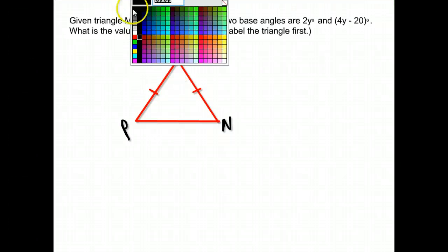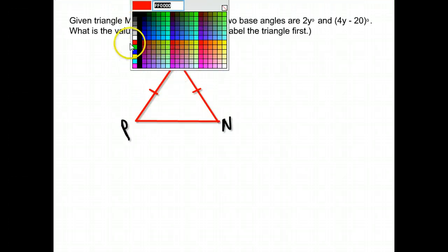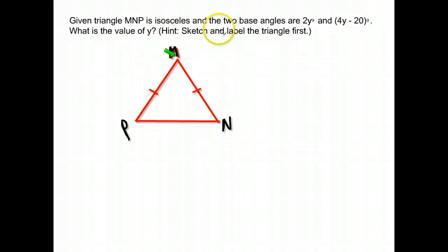The next thing I need to do is put in the information they gave me. The two base angles—remember, the base angles are those that are congruent, they're across from our congruent sides—so M and P in this case would be my base angles. They are 2y and 4y minus 20.